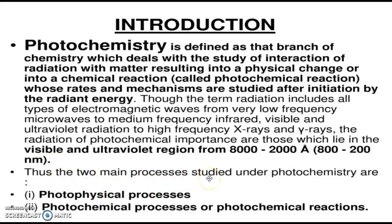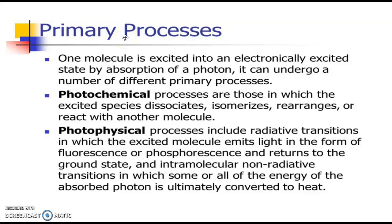The two main processes studied under photochemistry are the photophysical process and the photochemical process. When one molecule is excited into an electronically excited state by absorbing a photon, it can undergo a number of different primary processes. For example, photochemical processes in which the excited species undergoes dissociation, isomerization, rearrangement, or reaction with another molecule. Or it can undergo a photophysical process, which includes radiative transitions in which the excited molecule emits light in the form of fluorescence or phosphorescence.